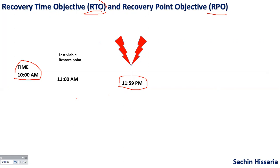What is your backup frequency? Suppose your backup frequency is one hour — every one hour you are taking the backup. So if disaster occurs at 11:59, when did you take your last backup? Suppose you have taken your last backup at 11 a.m. So after this disaster, how much is your data loss? Whatever data has been processed between 11 to 11:59, this data you would not be able to recover.